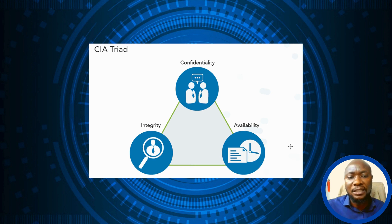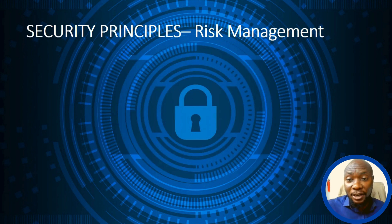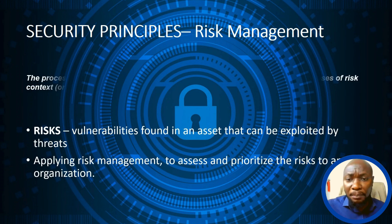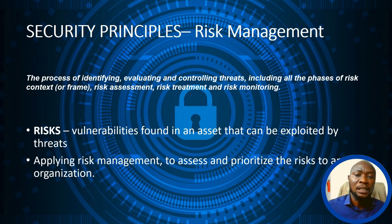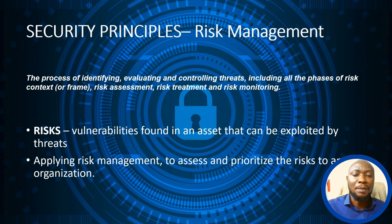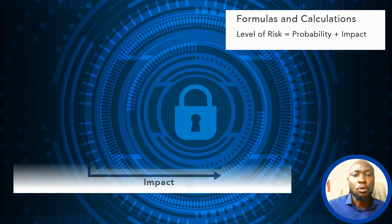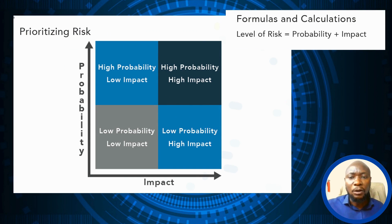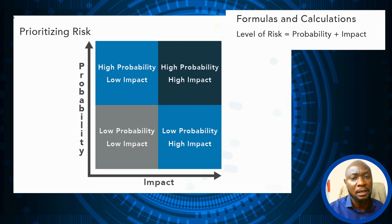This is a picture of the Confidentiality, Integrity, and Availability triangle — the CIA Triad. Another topic under Domain One is Risk Management, which is the process of identifying, evaluating, and controlling threats, including all phases: risk context, risk assessment, risk treatment, and monitoring. Risk is essentially a vulnerability found in an asset that can be exploited by threats. In risk management you assess and prioritize risks using a matrix: high probability/low impact, high probability/high impact, low probability/low impact, and low probability/high impact.